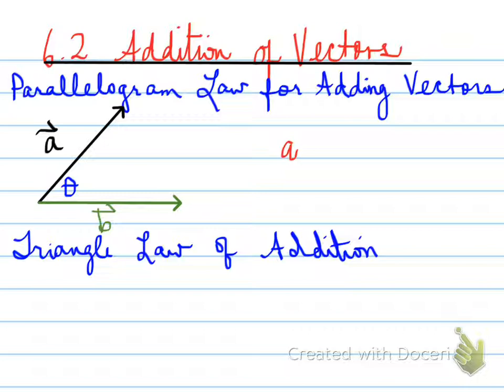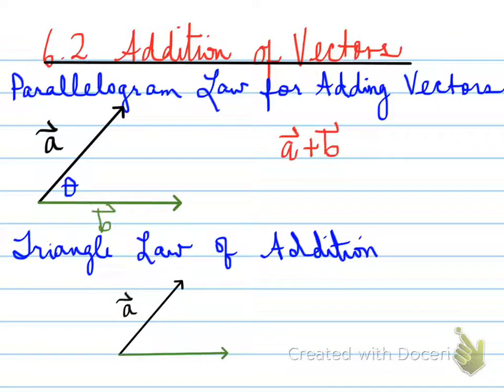What we can do is create an addition statement of the two vectors: A plus B. The other law of addition we're looking at is where we have vector A and B and the angle between the two vectors is theta, and we're going to use a triangle to find how to create the addition of two vectors — in this case, A plus B.